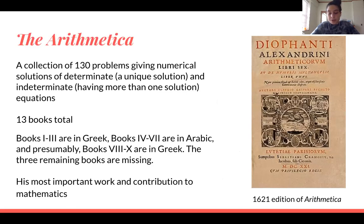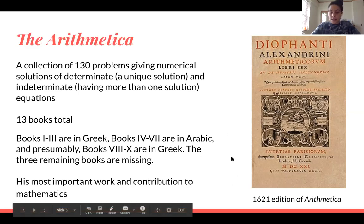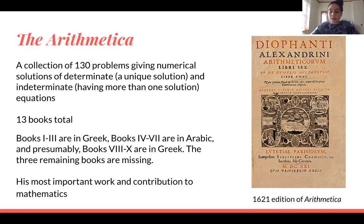However, an Arabic manuscript was found in 1968 from the Holy Shrine Library in Iran. It was the Arabic translation of books four to seven of the Arithmetica. And then we know that books one through three are in Greek, books four to seven are in Arabic, and then presumably books eight to ten are in Greek, but we don't know about the remaining three. Those remaining three books are missing. And then over here to the right is just a 1621 edition of the cover of the Arithmetica.